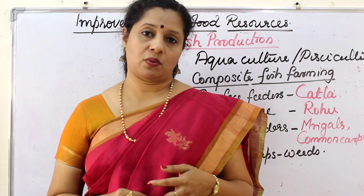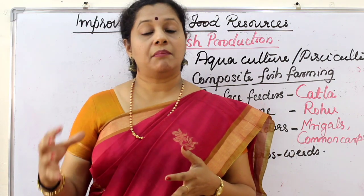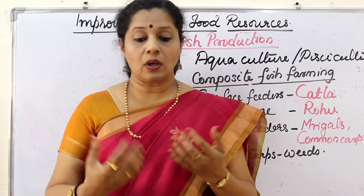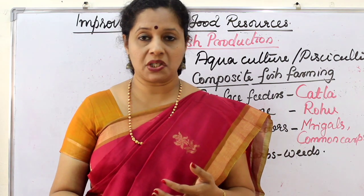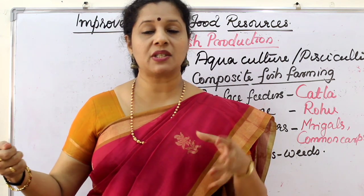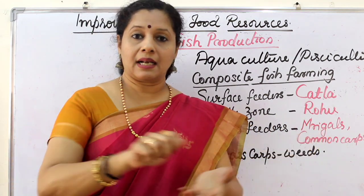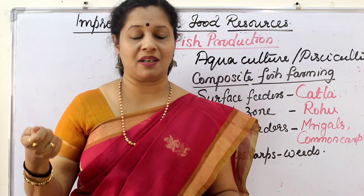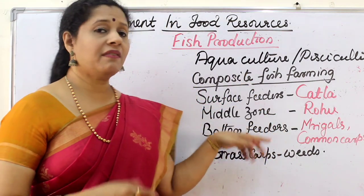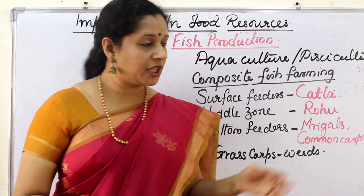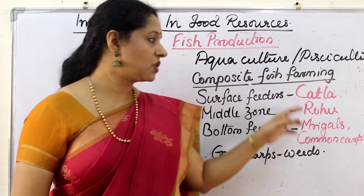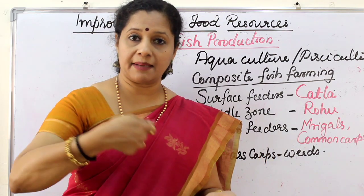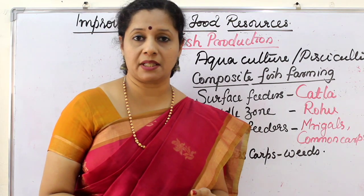A key requirement in composite fish farming is that the species must have different feed habits to avoid competition. The major problem is that all fish breed during the monsoon season, so fish seed from different species mixes together in the pond and cannot be separated. The solution is to give hormonal stimulation so that each species breeds at a different time. This way, the seed collected at any given time belongs to only one species.